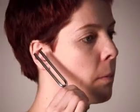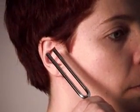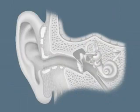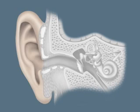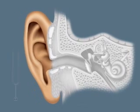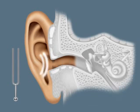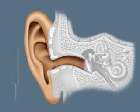The ear is the organ of hearing. It enables us to perceive and distinguish sounds. The outer ear is called the auricle. It is a cartilaginous horn that gathers sound vibrations and directs them to the external auditory canal.